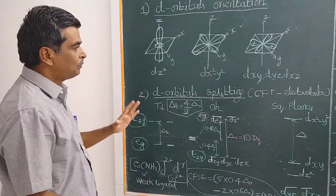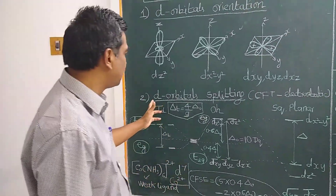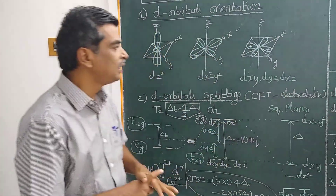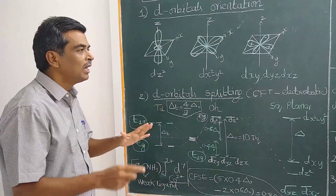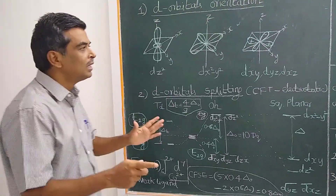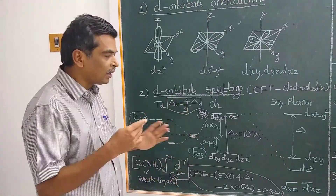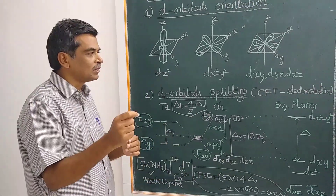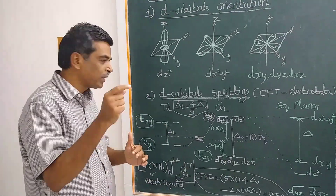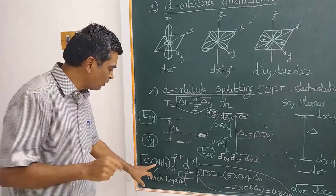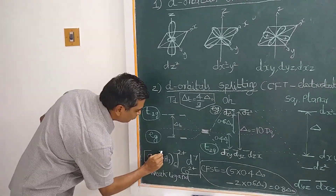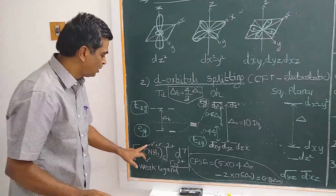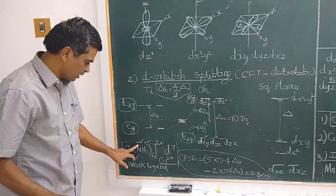Now let us look at crystal field theory and D-orbital splitting. Crystal field theory is based on the electrostatic interaction between the metal orbitals and the ligands. Ligands are considered as point charges — for example, F⁻, or as dipoles like ammonia and water.